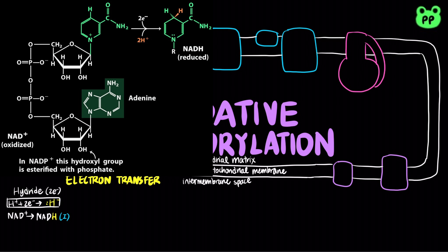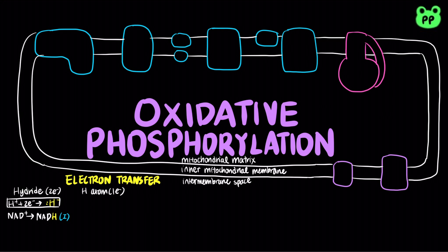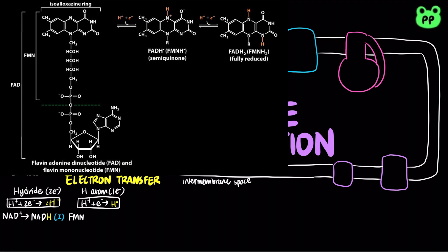Electron transfer can also occur through a hydrogen atom, which bears one electron. The oxidized flavonucleotide, FMN or FAD, can accept either one electron yielding the semiquinone form, or two electrons yielding FADH2 or FMNH2. The reduction of FAD to FADH2 is also catalyzed by FAD-linked dehydrogenases throughout catabolic pathways.